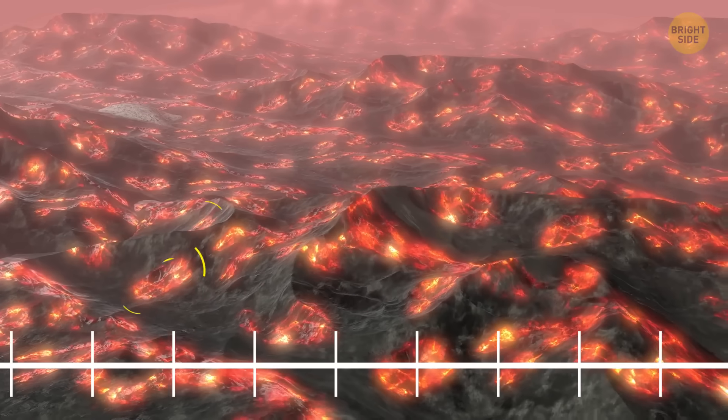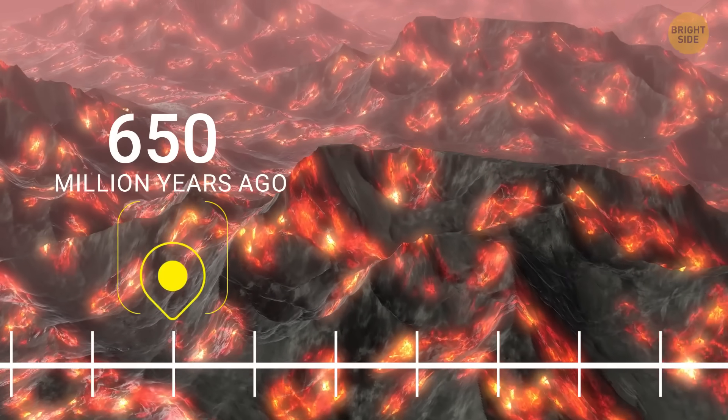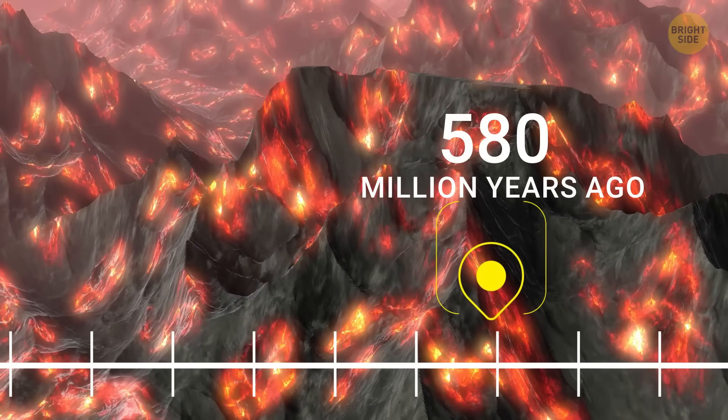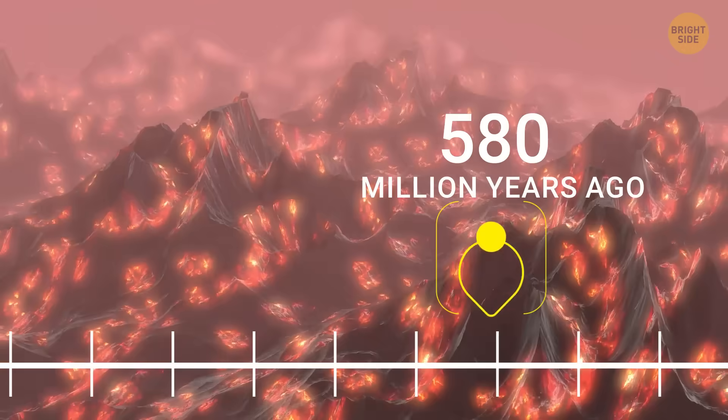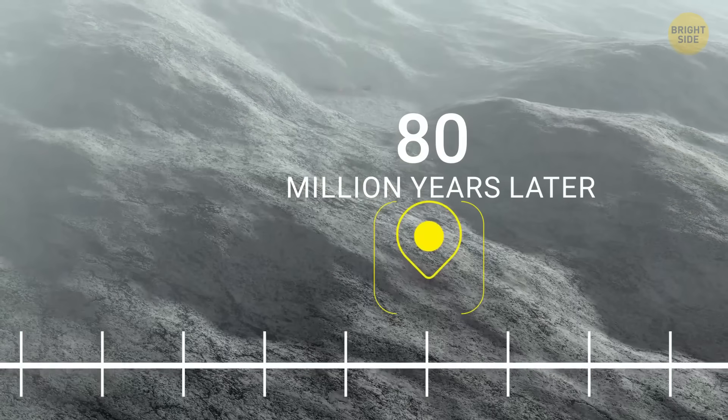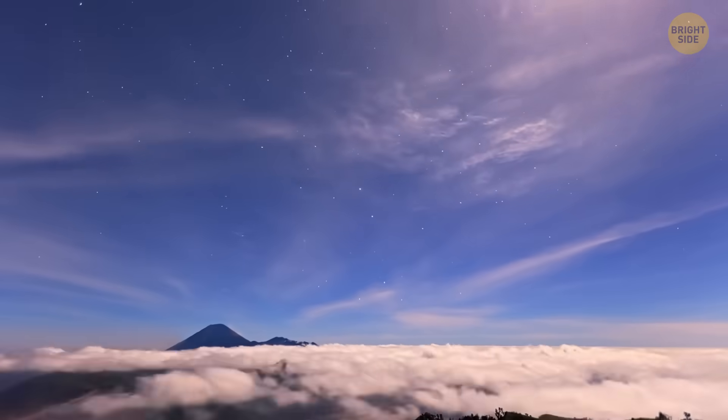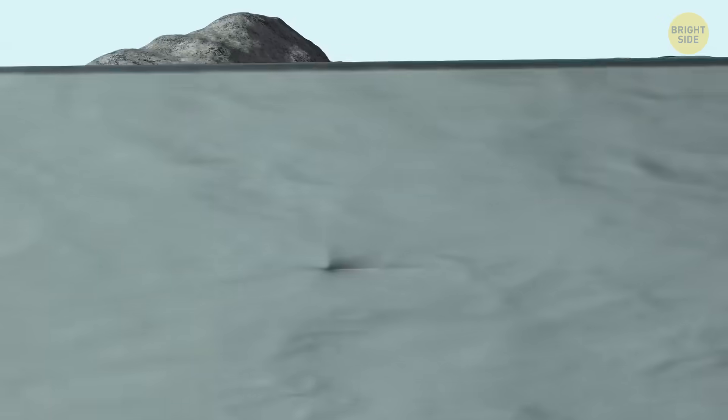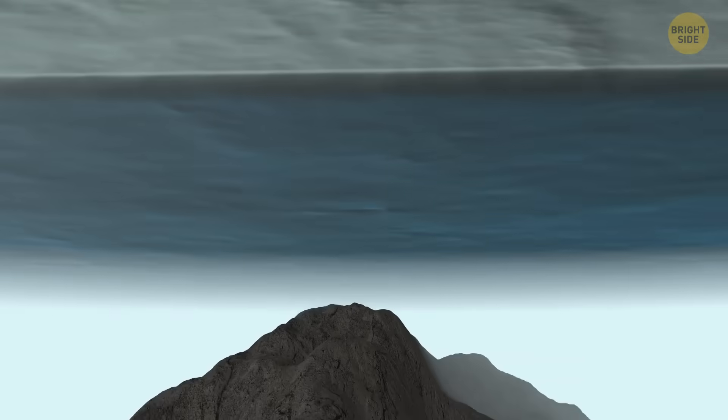So, the Gamburtsev Mountains began to grow about 650 million years ago. About 580 million years ago, they reached the height of the Himalayas. And 80 million years later, they experienced the melting of the Earth's crust. And while most of the mountain ranges on the planet were changing and collapsing, the Gamburtsev Mountains under ice remained untouched.